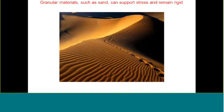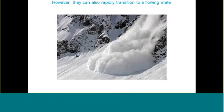Granular materials are interesting because they can support stress and remain rigid, as evidenced by sand dunes — they form dune and mountain-like structures that are rigid and don't just fall apart like a liquid would. But sometimes they can flow very rapidly, as evidenced by an avalanche. What was once rigid and quiescent — a few tremors later and suddenly a giant river of snow is flowing down the mountain. This way that granular materials can transition between a rigid and flowing state is a very subtle transition called the jamming transition.